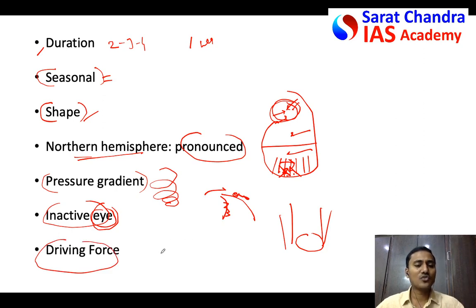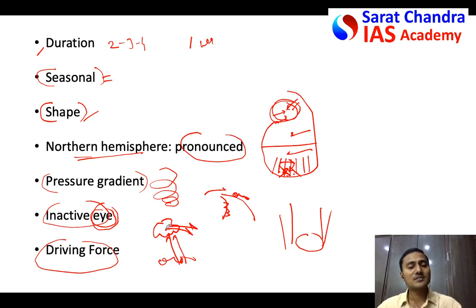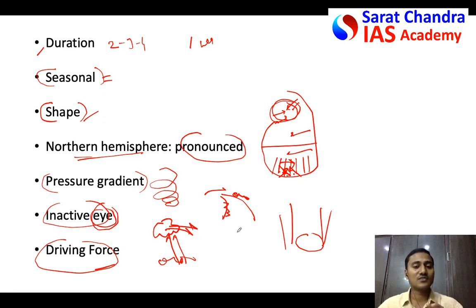Thirteenth difference: driving force. In tropical cyclones, as water evaporates it carries latent heat of evaporation; when the winds rise up and condensation occurs, all this energy (latent heat of condensation) is released — that is the driving force. For temperate cyclones, the driving force is the difference in air mass densities: polar easterlies are heavy and westerlies are light, so when they collide the warm winds rise up very fast.